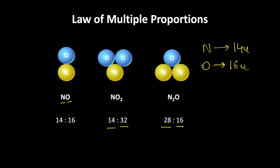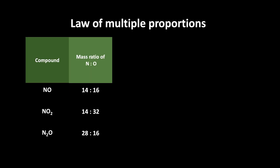Looking at these three compounds, the mass of one of the elements has to be fixed, which is clearly not the case because nitrogen is 14, 14, and 28 across the three, and oxygen is 16, 32, and 16. So how do we verify the law of multiple proportions here? We write all three compounds with their mass ratios of nitrogen to oxygen, and then fix the mass of nitrogen — let it be 28.